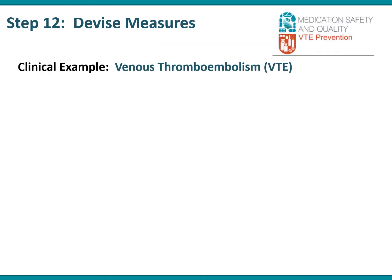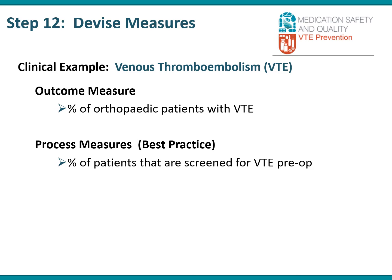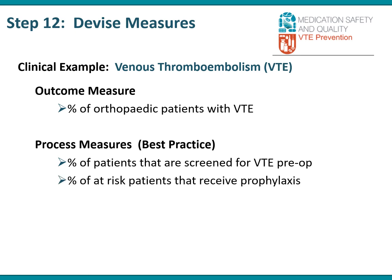Another clinical example of the family of measures is venous thromboembolism or VTE. An outcome measure for VTE would be the percentage of orthopedic patients that get a VTE — you'd want this rate to be very low. A process measure would be the percentage of patients screened for VTE preoperatively, and another is the percentage of at-risk patients that receive prophylaxis — both rates you'd want to be high.